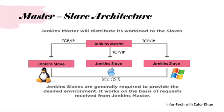We will use AWS EC2 instances for this setup. The question is: why does Jenkins require distributed architecture? For example, if a file contains different code and is very large, it requires multiple builds. A single Jenkins server cannot handle multiple files and builds simultaneously, so a distributed Jenkins architecture is necessary. Jenkins handles distributed builds using master-slave architecture.